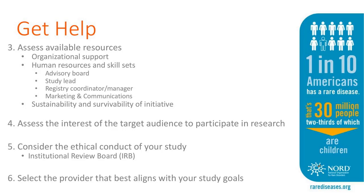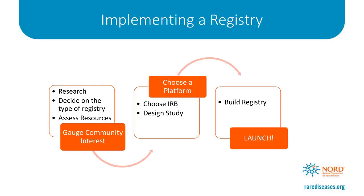Assess the interest of the target audience to participate in research — do you have the backing of the rare disease community? Consider the ethical conduct of your study. Patients' rights need to be accounted for, so you want to enlist the help of an Institutional Review Board, which is responsible for ensuring your study will be conducted ethically and patients' rights will be protected. Once you've gone through all these steps, select the provider that best aligns with your study goals. The steps are: research, decide on registry type, assess resources, gauge the community, design the study, choose the IRB, choose a platform, build the registry, and launch.